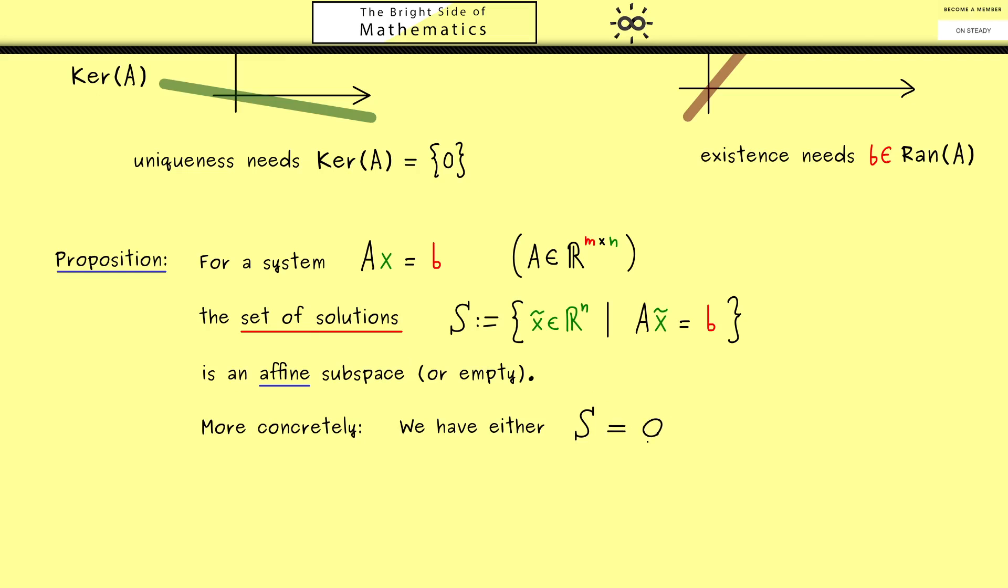Either we have that S is the empty set, or we have the more interesting case that S is a translated subspace. In fact we can write it down as a fixed vector v_0 plus a subspace. And you might already guess this subspace is indeed the kernel of A. Please recall this is exactly how we imagined it in the picture above.